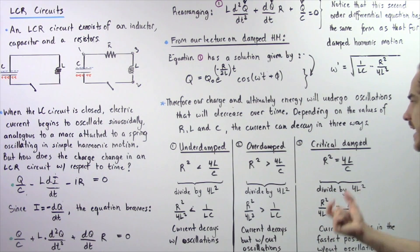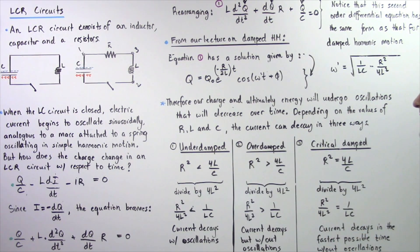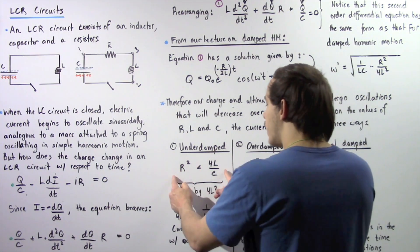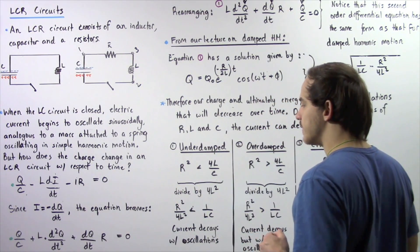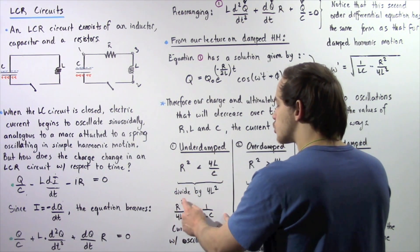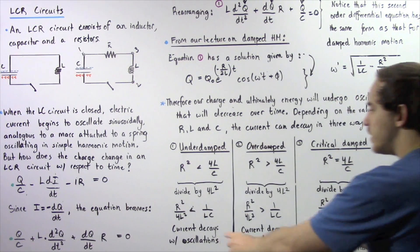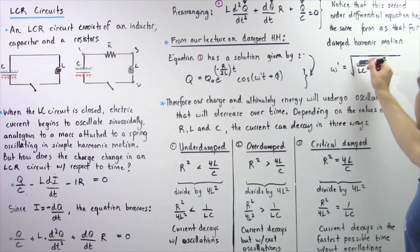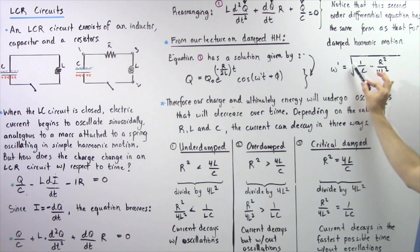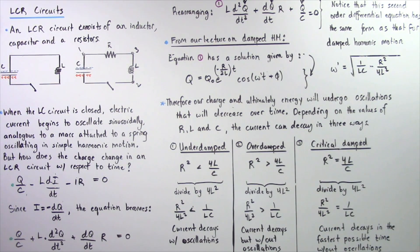In underdamped decay, we have the inequality R² < 4L/C. Dividing both sides by 4L², this means R²/4L² < 1/LC, so the quantity 1/LC − R²/4L² is positive. Therefore, ω′ is a positive real number, which implies that the electric current decays with damped oscillations.